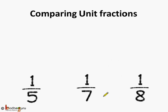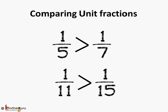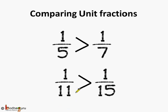If we take 1 by 8th and compare it with 1 by 7th: 7 is less than 8, which means the fraction 1 by 7th is greater than 1 by 8th. So, 1 by 5th is greater than 1 by 7th because 5th is less than 7th. And 1 by 11th is greater than 1 by 15th, because 11 is a lesser value as compared to 15.